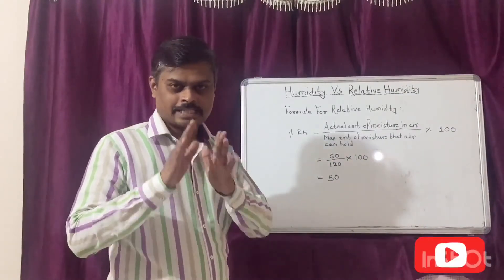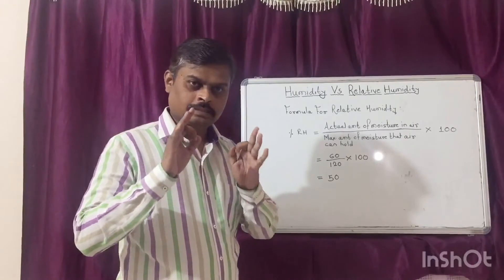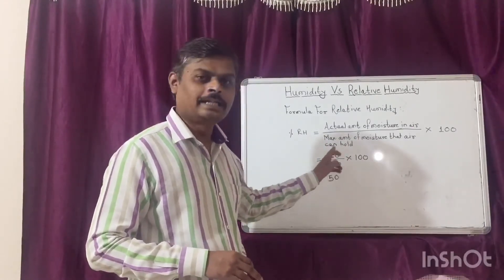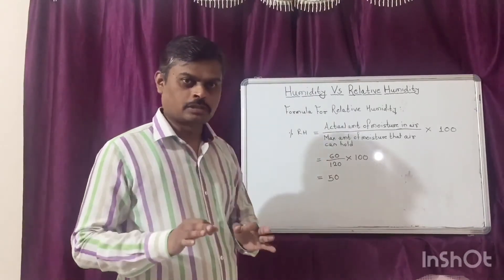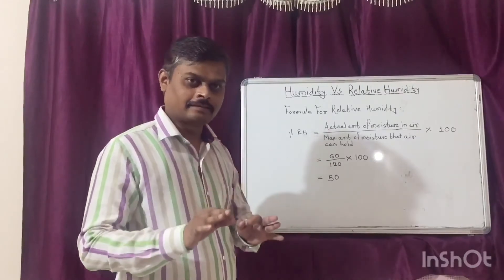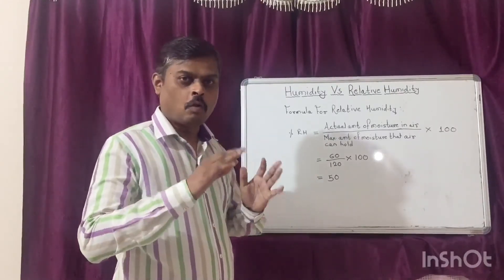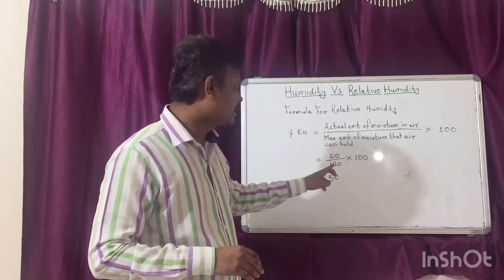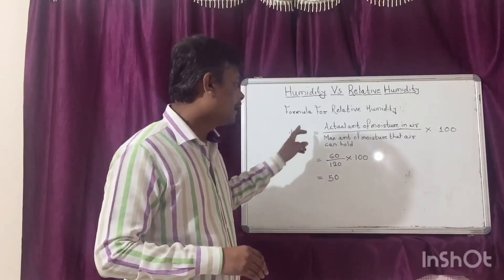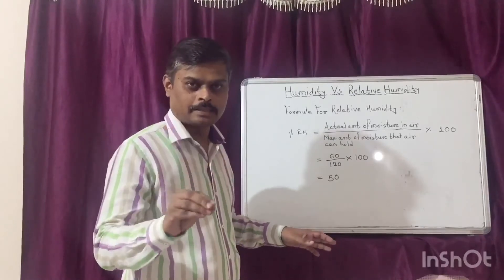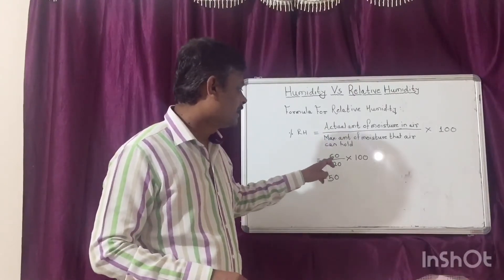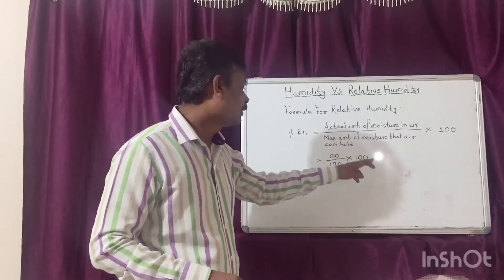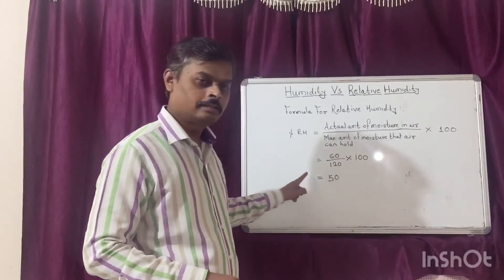To understand it, let's take one example. Consider an area which can hold a maximum of 120 gram per litre of moisture in the air, and suppose the actual moisture in the air of the same area is 60 gram per litre. Then the relative humidity is: 60 divided by 120, multiplied by 100, which equals 50%. So the relative humidity of that area is 50%.